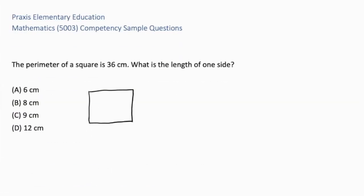The perimeter of a square is 36 centimeters. What is the length of one side? A, 6 centimeters. B, 8 centimeters. C, 9 centimeters. Or D, 12 centimeters. Perimeter is adding the sides, side plus side plus side plus side, or taking one side and multiplying it times 4. We can take the number 36 and divide it by 4. 36 divided by 4 is 9. So each side of the square is 9 centimeters long. The correct answer is C, 9 centimeters.